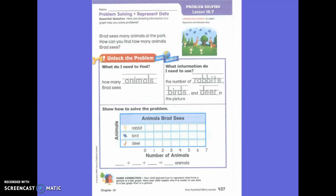So let's take a look at this story. It says, Brad sees many animals at the park. How can you find how many animals Brad sees? Does it tell us any information? No. It doesn't give us any numbers. So what are we supposed to put on our charts? Nothing until we figure it out. Well, how are we going to figure it out? It tells us over the animals that we saw and then we read them on our charts.